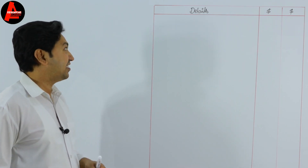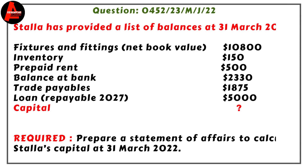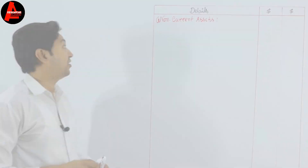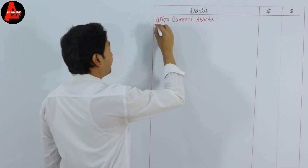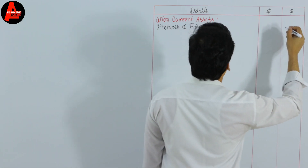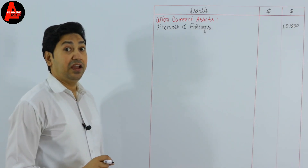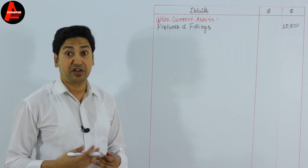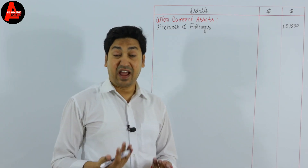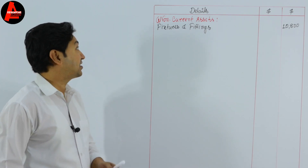First we write non-current assets. From the question, the non-current asset is fixtures and fittings at net book value: $10,800. We write the amount in the outer column. This is the only non-current asset in this question. Other examples of non-current assets include buildings, land, equipment, motor vehicles, and furniture.